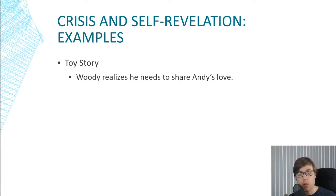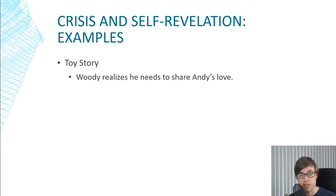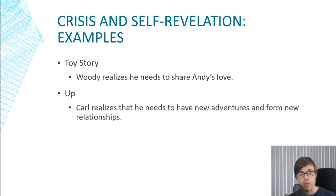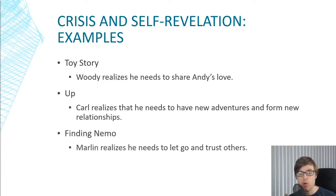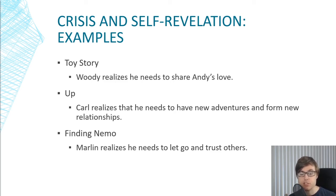In Toy Story, Woody realizes he needs to share Andy's love. The crisis moment is where Woody and Buzz are stuck in Sid's place and it looks like they'll never escape — and at the lowest point, Woody has a realization about his moral weakness: he needs to share Andy's love and not be selfish. In Up, the all-is-lost moment is actually a pyrrhic victory — Carl accomplishes his goal and reaches Paradise Falls, but realizes it wasn't worth it and that he needs new adventures and new relationships. In Finding Nemo, Marlin is in the whale with Dory and it seems like they're going to die, but he realizes he needs to just let go and trust others. He has that self-revelation, which he'll later demonstrate through action with Nemo.